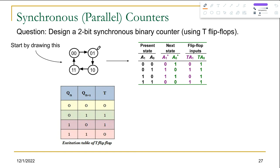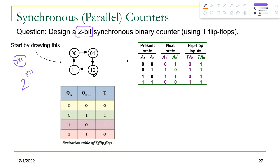There are four states since we are building a 2-bit synchronous counter. For two bits there would be four states. If the number of bits is m, then the number of states would be 2 to the power m. So for two bits we get four different states: 00, 01, 10, and 11, and we show the transitions based upon these arrows — these are the default transitions for a simple 2-bit synchronous binary counter.